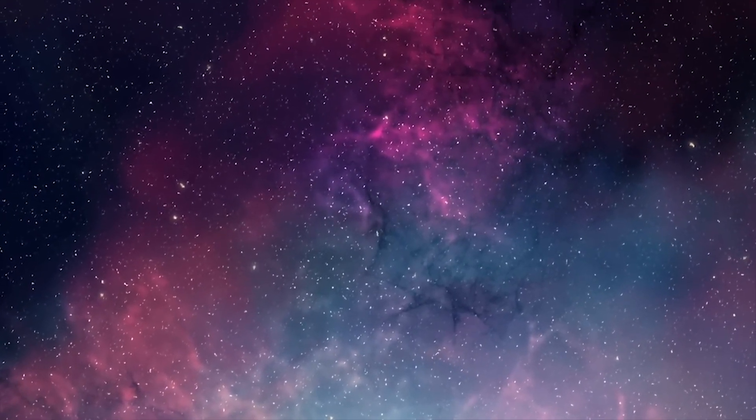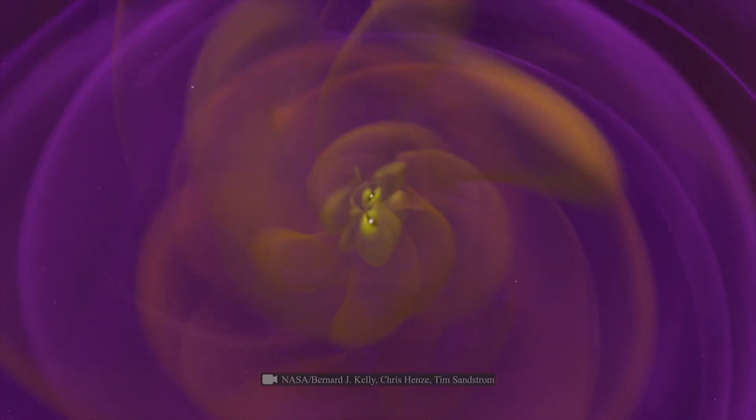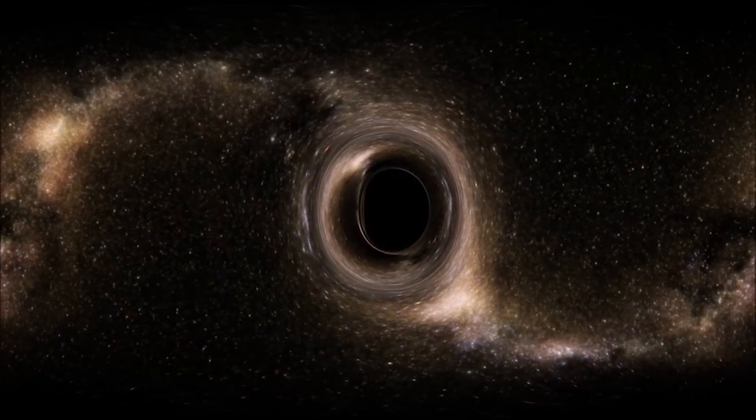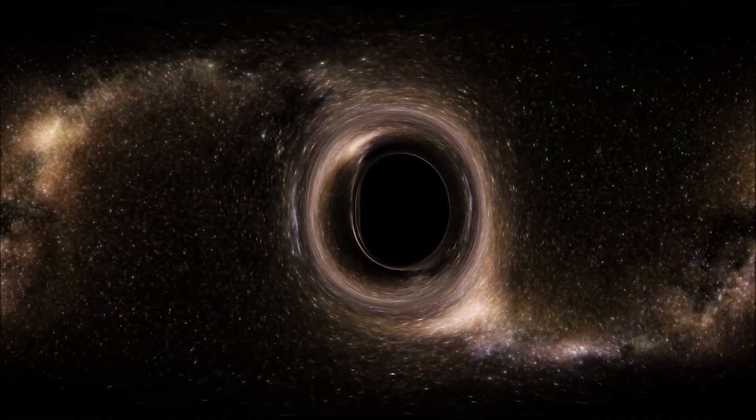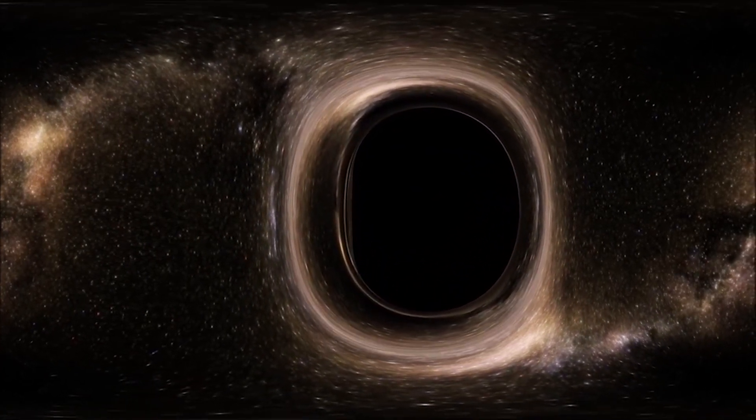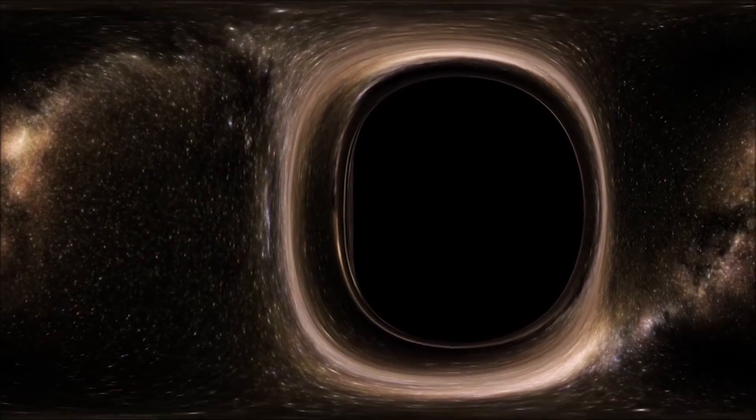As the matter falls into TON 618, it forms an accretion disk, a swirling disk of superheated gas and dust orbiting around the black hole. The intense gravitational forces and friction within this disk generate extreme temperatures, causing the matter to emit vast amounts of energy across the electromagnetic spectrum.